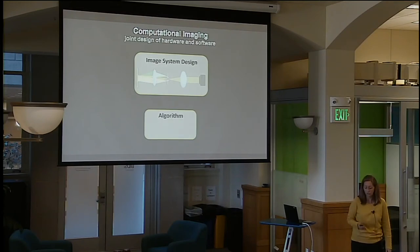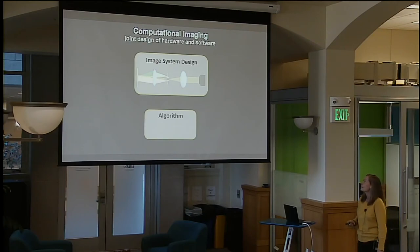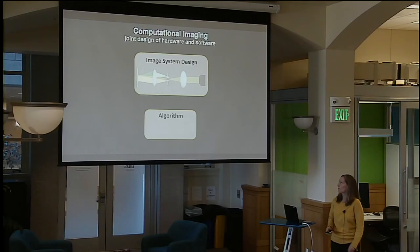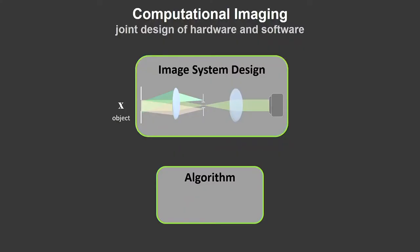This has two critical parts. First, you design the optical imaging system — almost everything we do is microscopy — not to get a perfect picture at the output, but to get information through the microscope. You've got some thing you're trying to measure, X. You put it through a system modeled by A, take measurements Y, and the algorithm finds X given those measurements. A nice, simple linear system.